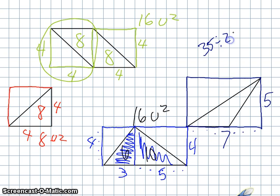35 divided by 2, 17 and a half. So, we know that this whole rectangle is 17 and a half square units. Now, the problem is, is that I still have to deal with this part in there. So, I know that this whole side is 17 and a half units.